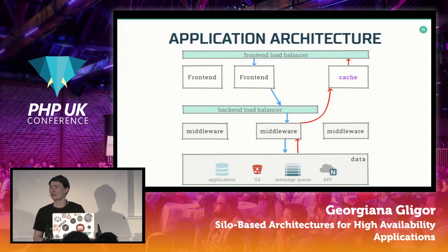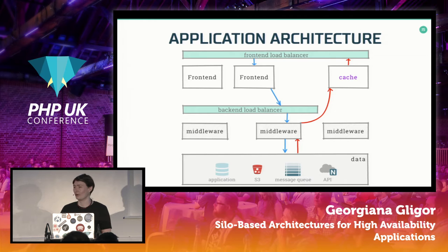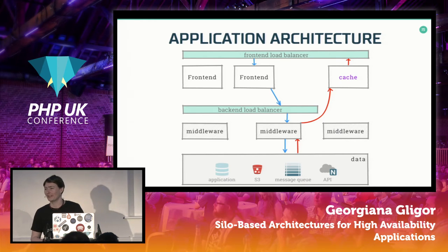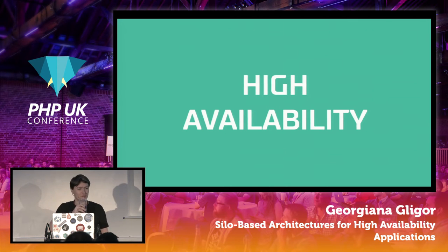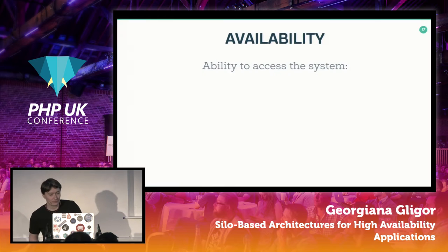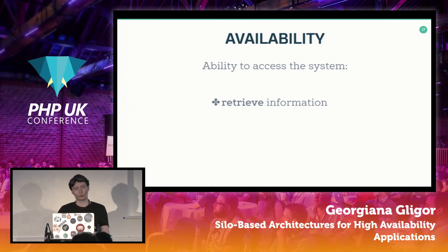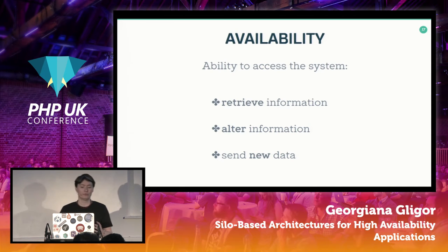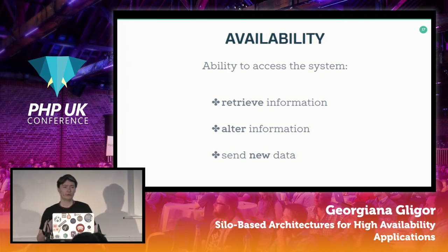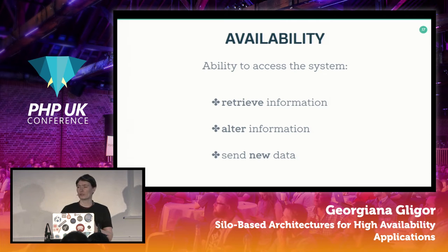So why have all this complexity and still not be able to achieve high availability? Let's define availability first. An available system has the ability to retrieve information — that's the first thing — but you also need to be able to change information and add new data. For example, if you're on Facebook and you look at your feed that's retrieval, but if you're unable to edit a misspelling in your last post because something goes wrong, then it's not fully functional.